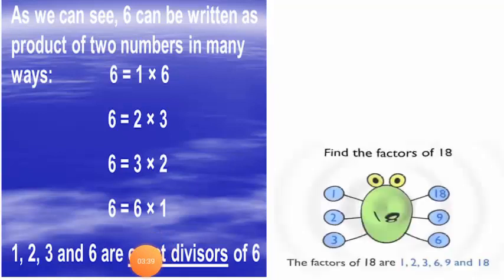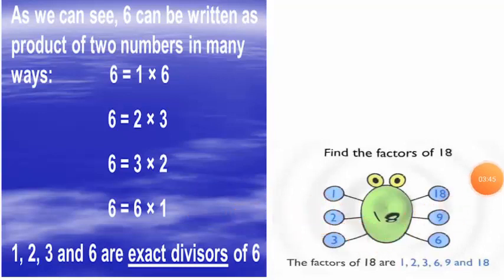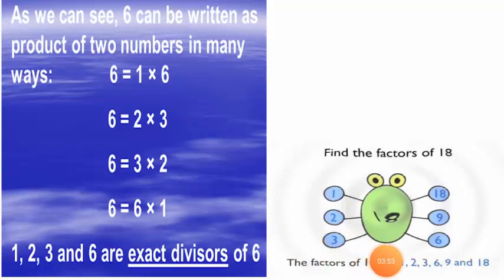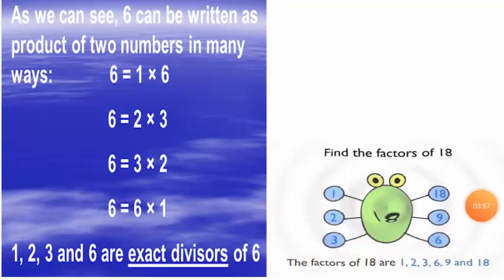Now let's find the factors of eighteen. One goes into eighteen eighteen times; two goes into eighteen nine times; whereas three goes into eighteen six times. So all the factors of eighteen are one, two, three, six, nine, and eighteen.